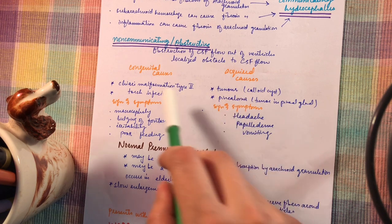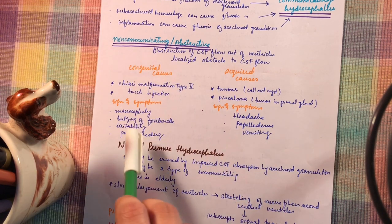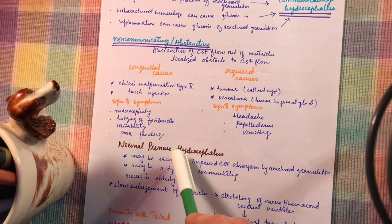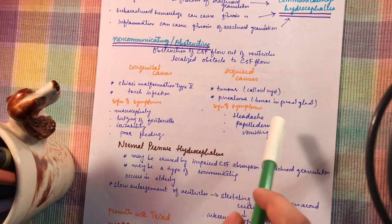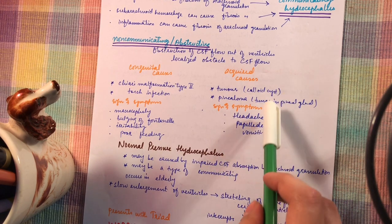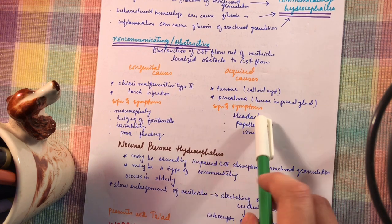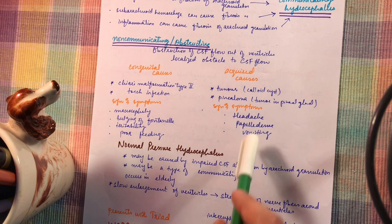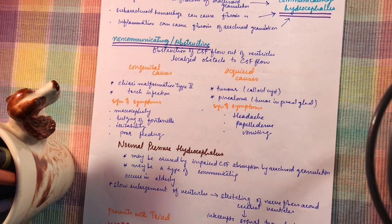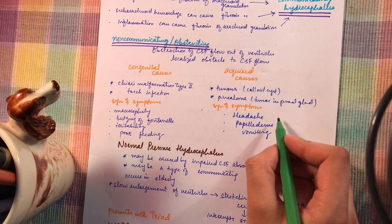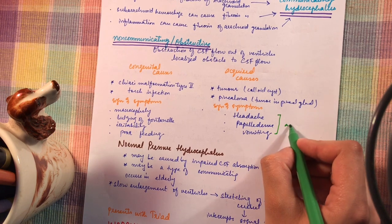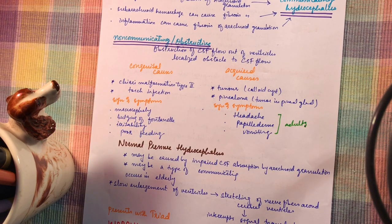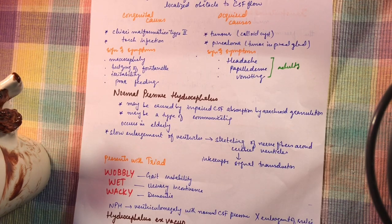Signs and symptoms in the congenital form include macrocephaly, bulging of the fontanel, irritability, and poor feeding. In acquired causes, tumors — most importantly colloid cyst and pinealoma (tumor in the pineal gland) — cause obstructive hydrocephalus. Signs and symptoms in adults include headache, papilledema, and vomiting, which differ from those in children.